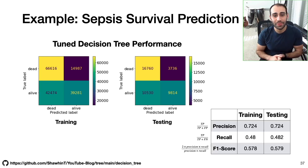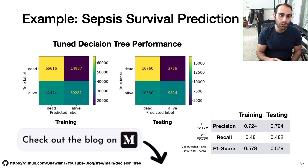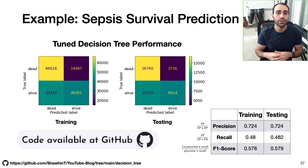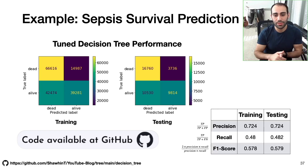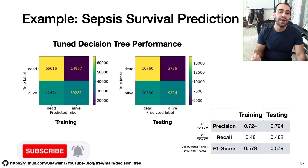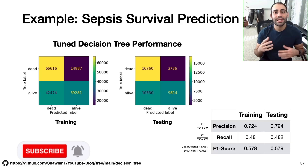That was a tremendous amount of information. If you want to read more, check out the blog published in Towards Data Science on Medium. Be sure to check out the GitHub repo and steal the code to train your own decision tree model with your own hyperparameter optimizations. If you enjoyed this content, please consider liking, subscribing, and sharing your thoughts in the comments section below. Thank you for your time and thanks for watching.